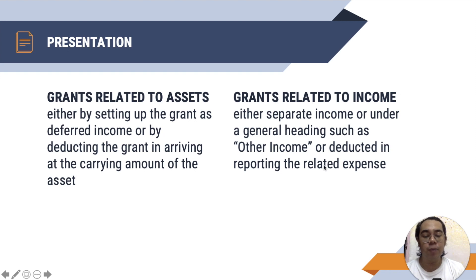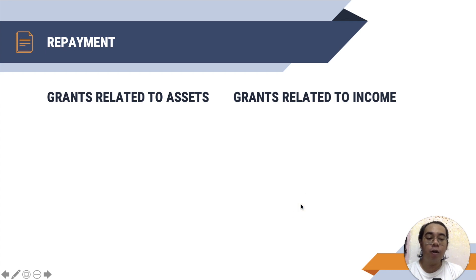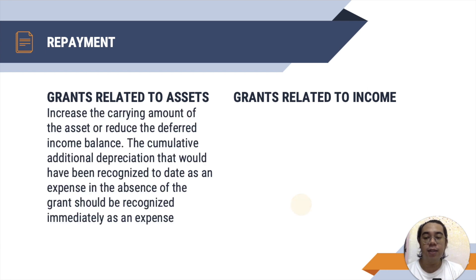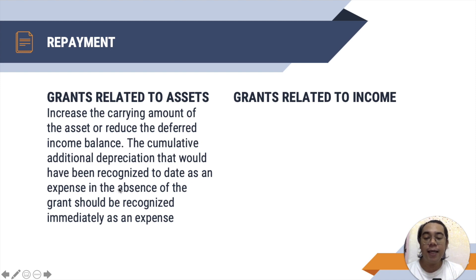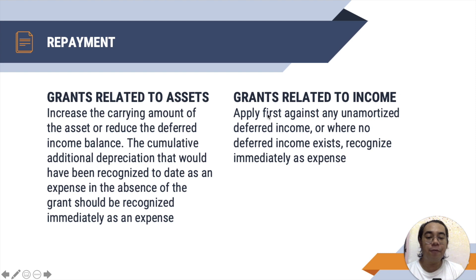What if there is a repayment, meaning the government says to return the grant? When there is a repayment, we account for it as a change in accounting estimate, or account for it prospectively. For grants related to assets, either increase the carrying amount of the asset if it was initially treated as a deduction from carrying amount, or reduce the deferred income balance if it was initially recorded as deferred income. The cumulative additional depreciation that would have been recognized to date in the absence of the grant should be immediately recognized as an expense. For grants related to income, apply first against any unamortized deferred income, or where no deferred income exists, recognized immediately as expense.